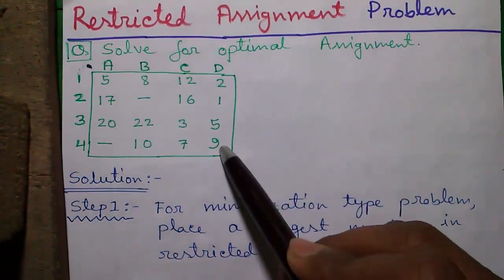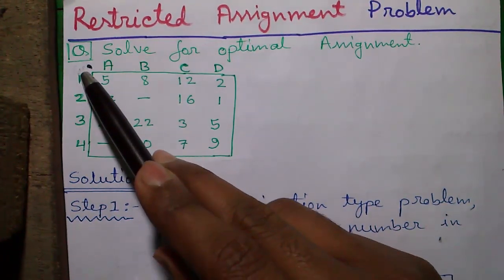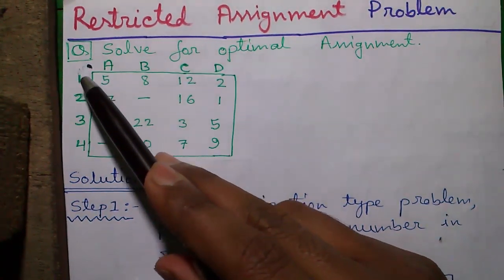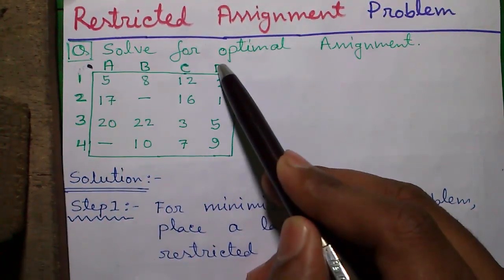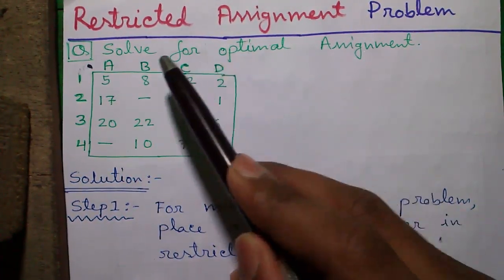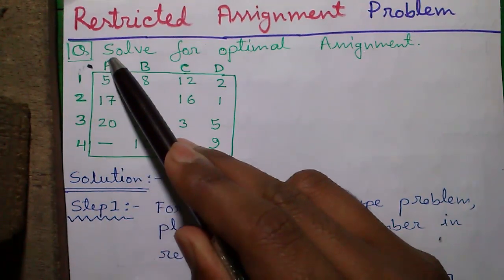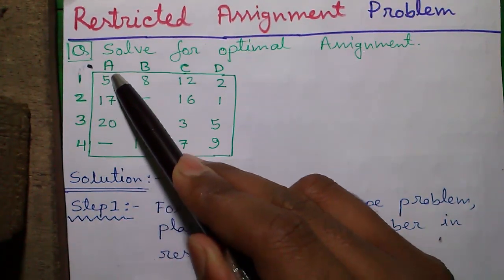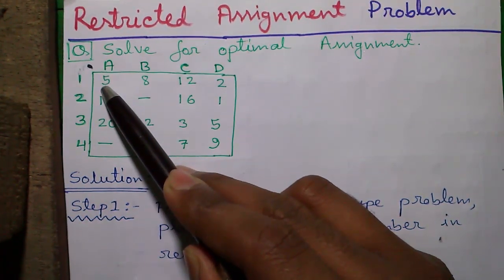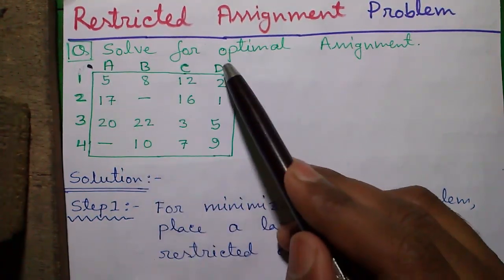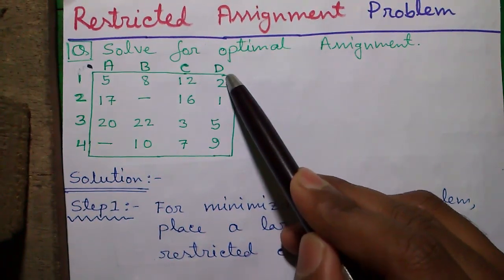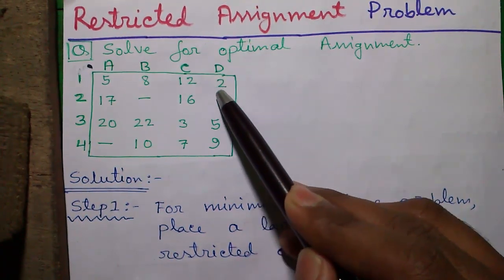Here an assignment problem is given. Suppose we have 4 machines 1, 2, 3 and 4, and 4 persons A, B, C and D. See if we assign machine 1 to person A our cost of assignment is 5 units that may be 5 rupees or 5 dollars. But if we assign machine 1 to person D our cost of assignment is reduced to 2 units.